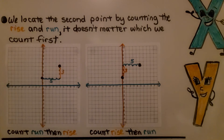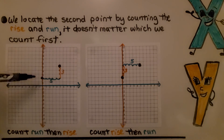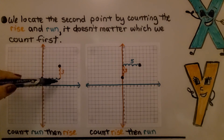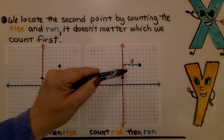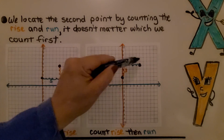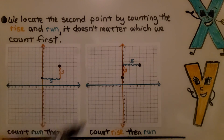Again, we locate the second point by counting the rise and run, and it doesn't matter which we count first. If we know that our slope is 3/5, we can count the run 5 and then the rise 3, or we can count the rise first and then the run. Either way, we're going to have the second point in the exact same place.